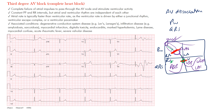Causes include inferior or anterior MI, idiopathic conduction system fibrosis as people age, and Lyme disease, which affects the AV node and can progress to complete heart block if untreated — though treatment can reverse it. Medications that slow AV nodal conduction can also cause this, including beta blockers, calcium channel blockers, digoxin, and amiodarone.